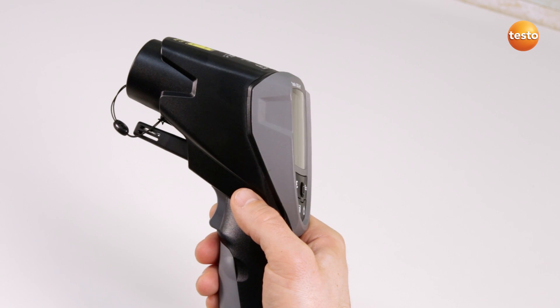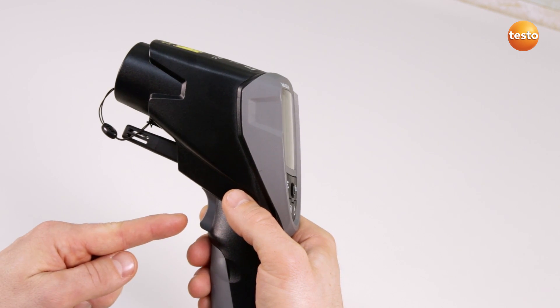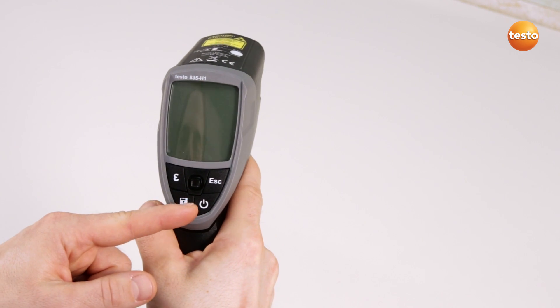You can switch the Testo 835 on using two buttons, either with the trigger on the front of the instrument or using the on button at the rear.